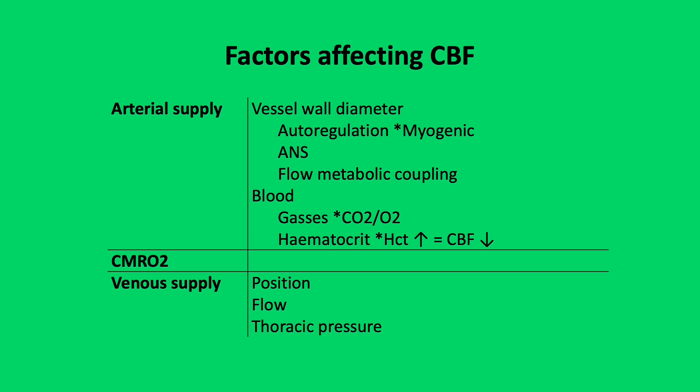Blood composition: CO2 and O2 both have effects on cerebral blood flow. Increasing the haematocrit can result in a reduction in cerebral blood flow. Regarding CMRO2 and venous supply, the patient's position, thoracic pressure, and impedance to flow out via the venous supply can all affect cerebral blood flow.